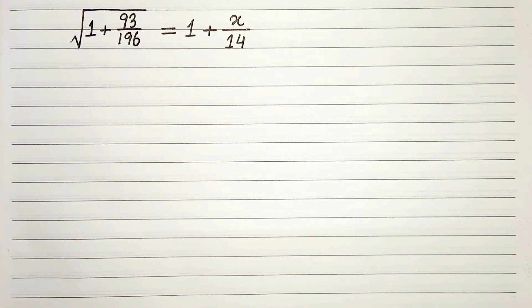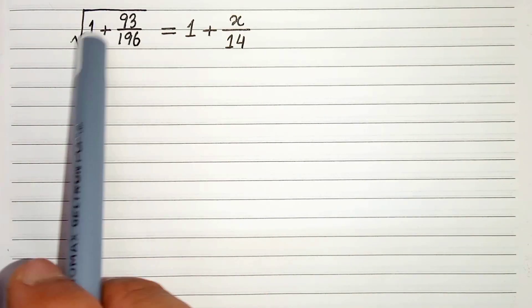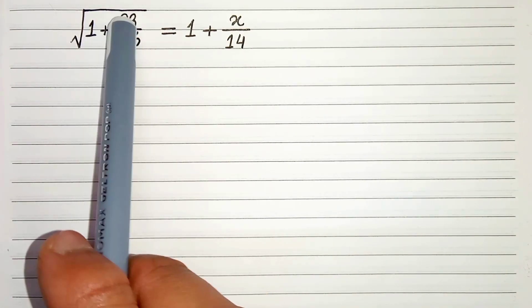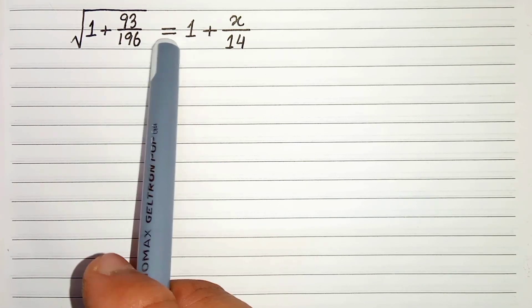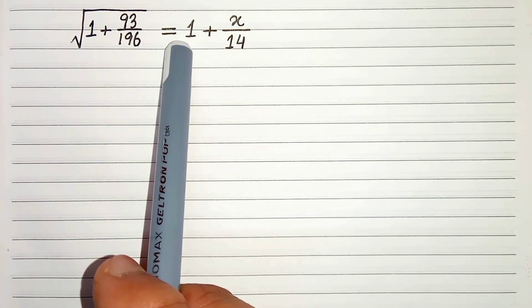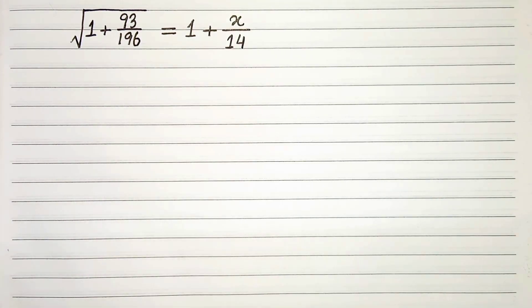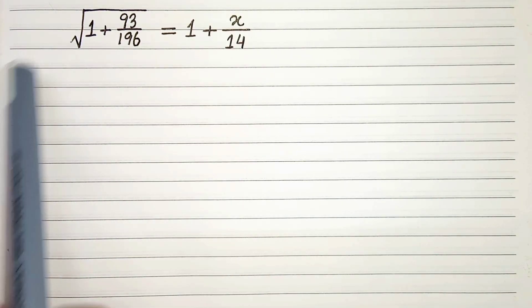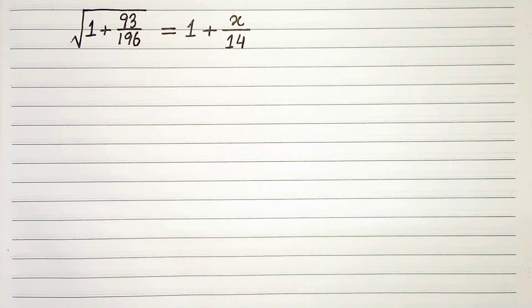Hello everyone. In this video we have root under 1 plus 93 by 196 is equals to 1 plus x by 14. We have to solve this and find the value of x. So let's start.